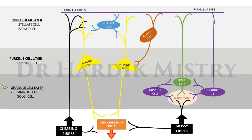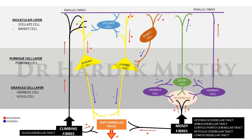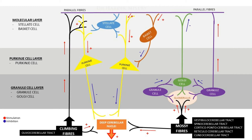These cells form the intrinsic cerebellar circuitry. Afferents arrive via the olivocerebellar tract through climbing fibers, and via the vestibulocerebellar, spinocerebellar, corticopontocerebellar, reticulocerebellar, and cuneocerebellar tracts through mossy fibers. Efferents leave from the deep cerebellar nuclei.